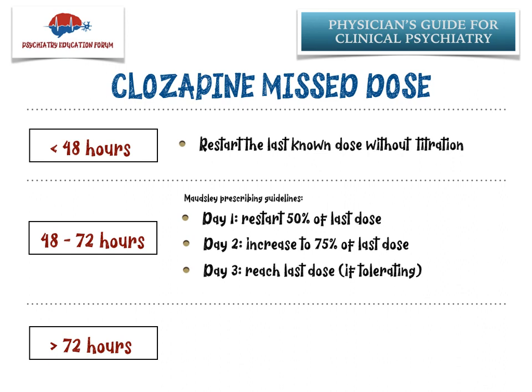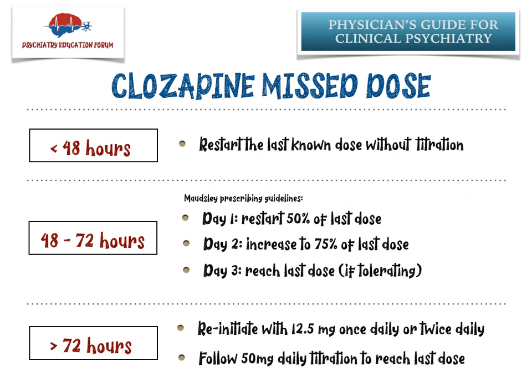If a patient has missed more than 72 hours, the recommendation is to initiate back from a low dose — either 12.5 mg once or twice daily, or if you prefer, start at 50 mg daily — and titration should be slow. You can increase by 50 mg every day to reach the last known dose. But again, please look into all the factors we just discussed and then make the decision regarding what dose to restart on day one and how fast to titrate to reach a therapeutic dosage that has worked for your patient in the past.